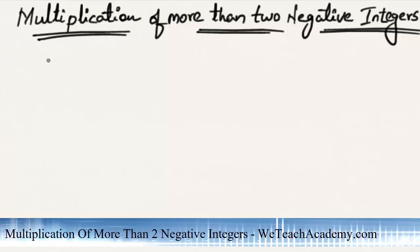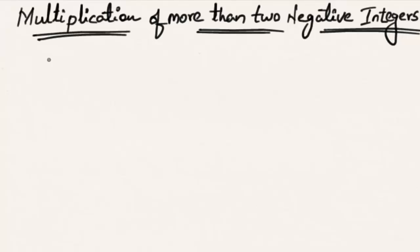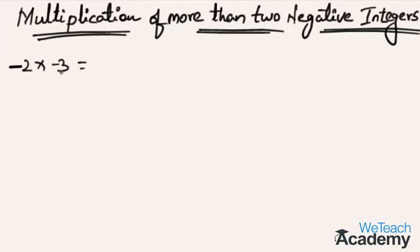Welcome to vteachacademy.com. In this presentation we are going to discuss multiplication of more than two negative integers. We all know that the product of two negative integers is a positive integer. For example, minus two multiplied with minus three is six, which is a positive integer.